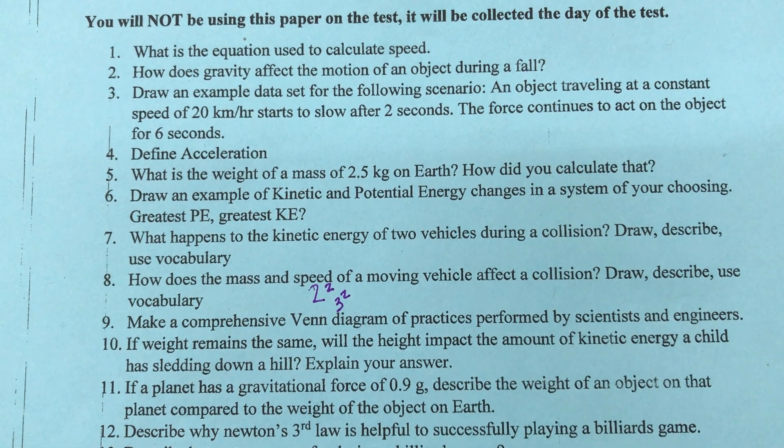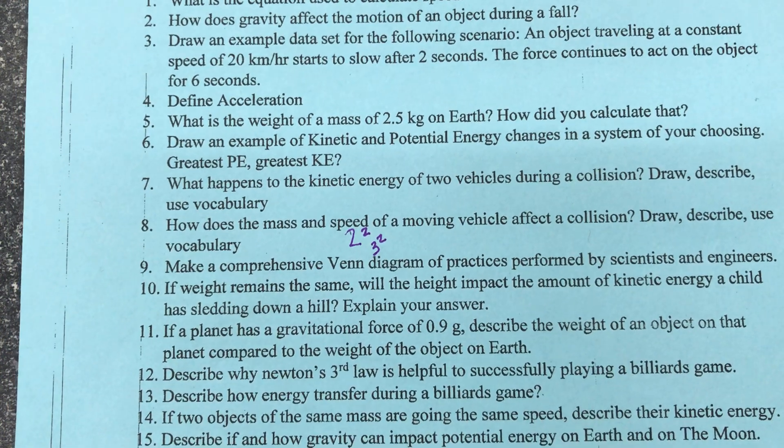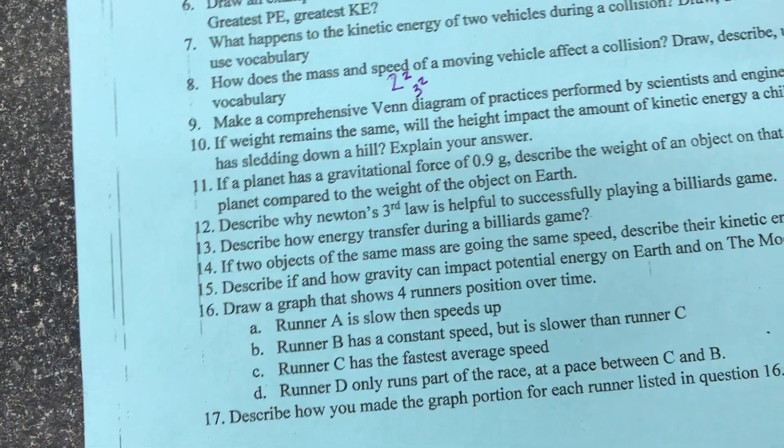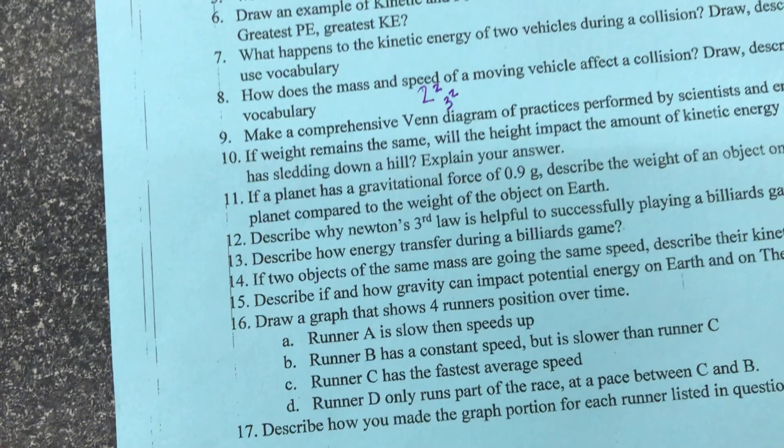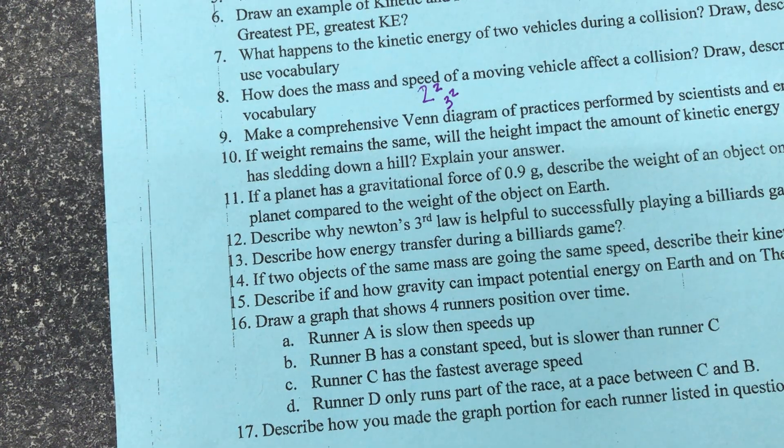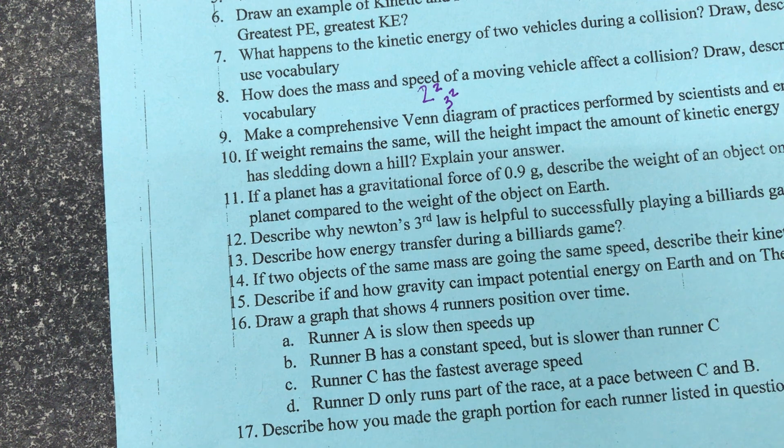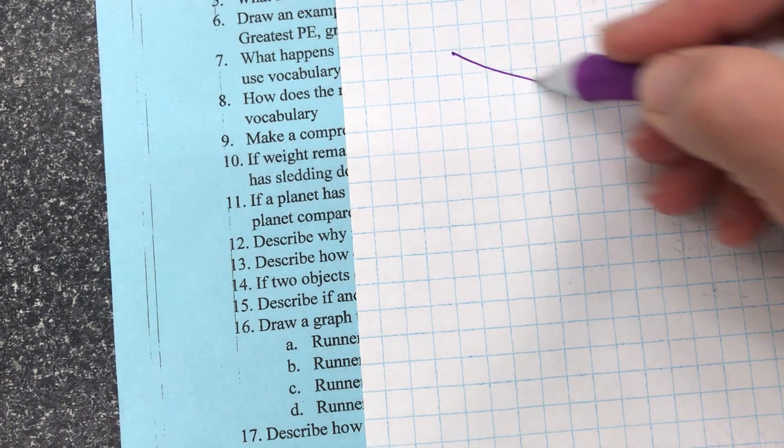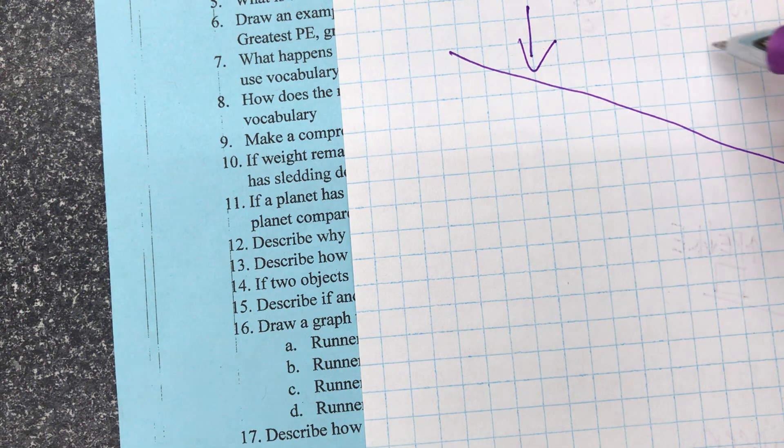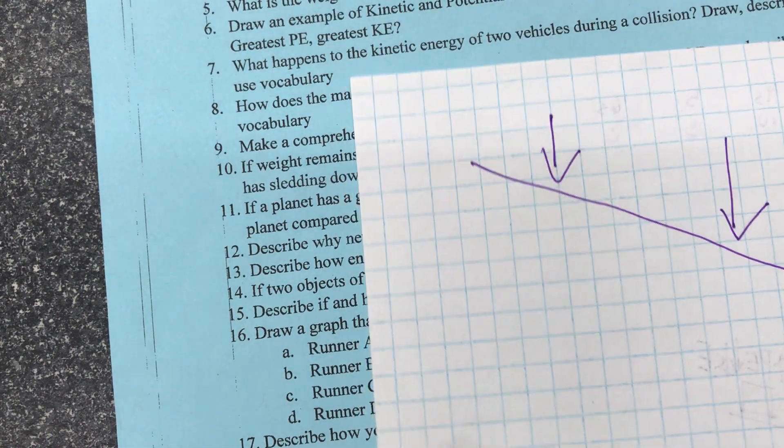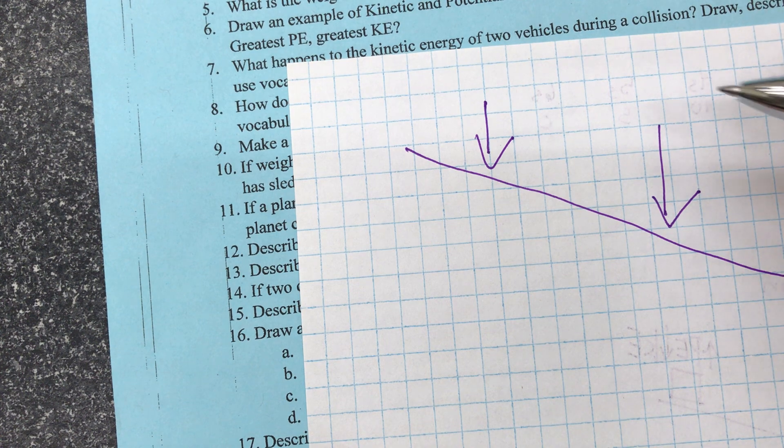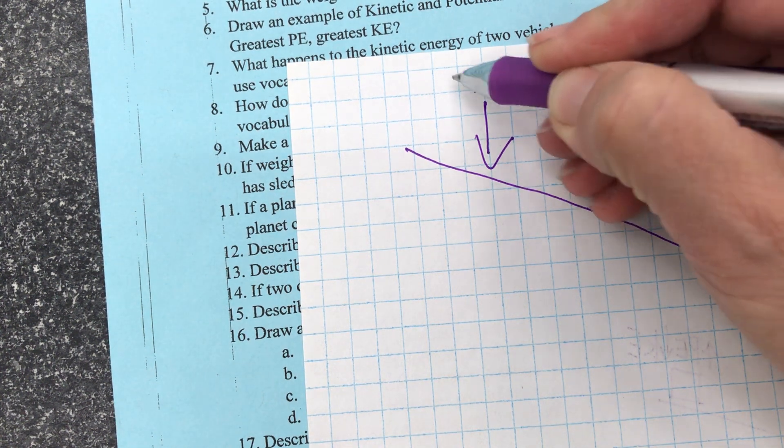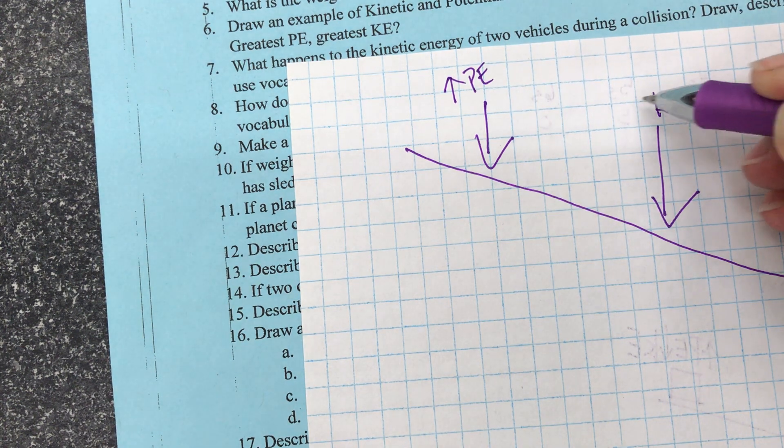Let's take a look at question number 10. So I'm going to slide this up just a little bit. If weight remains the same, will the height impact the amount of kinetic energy a child has sledding down a hill? Explain your answer. So basically what we're looking at is depending on where a child is placed on the hill, which one has higher kinetic energy and which one has more potential energy. This one's going to have higher potential, this one's going to have higher kinetic.